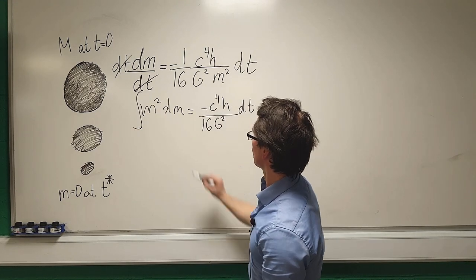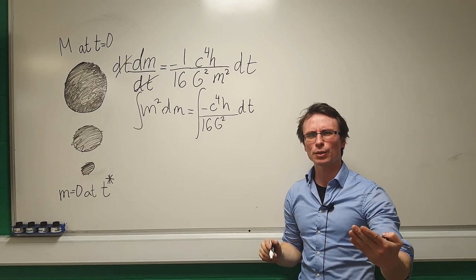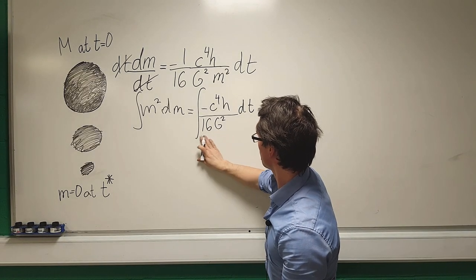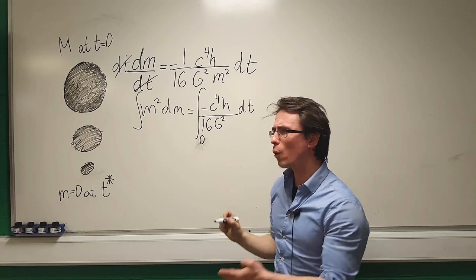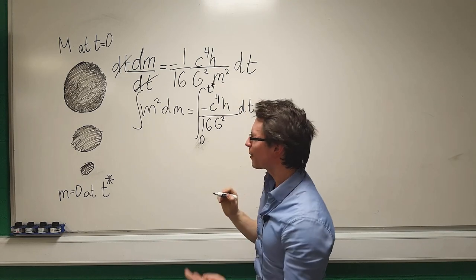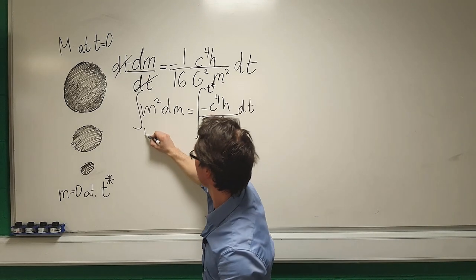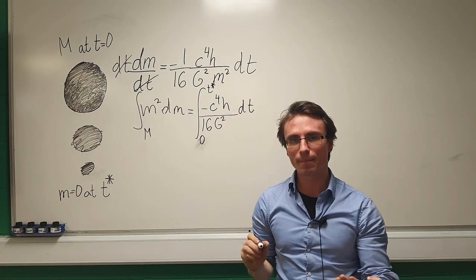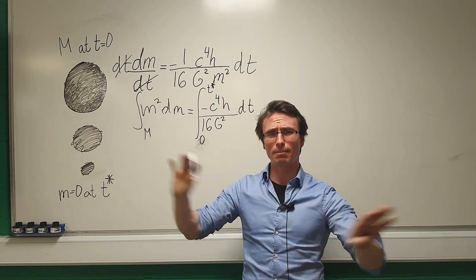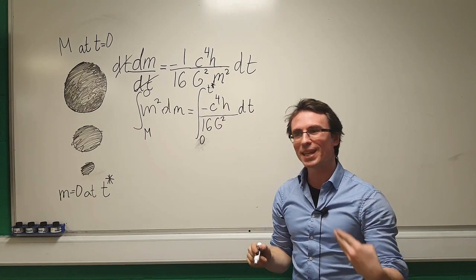So let's integrate. I'm going to integrate this with respect to m and this side with respect to t. Now what will the boundaries of my integration be? t will go from zero all the way up to the time at which the black hole has evaporated t star. Our initial mass of the black hole is just capital m and our final mass of the black hole will be zero because it has completely evaporated.